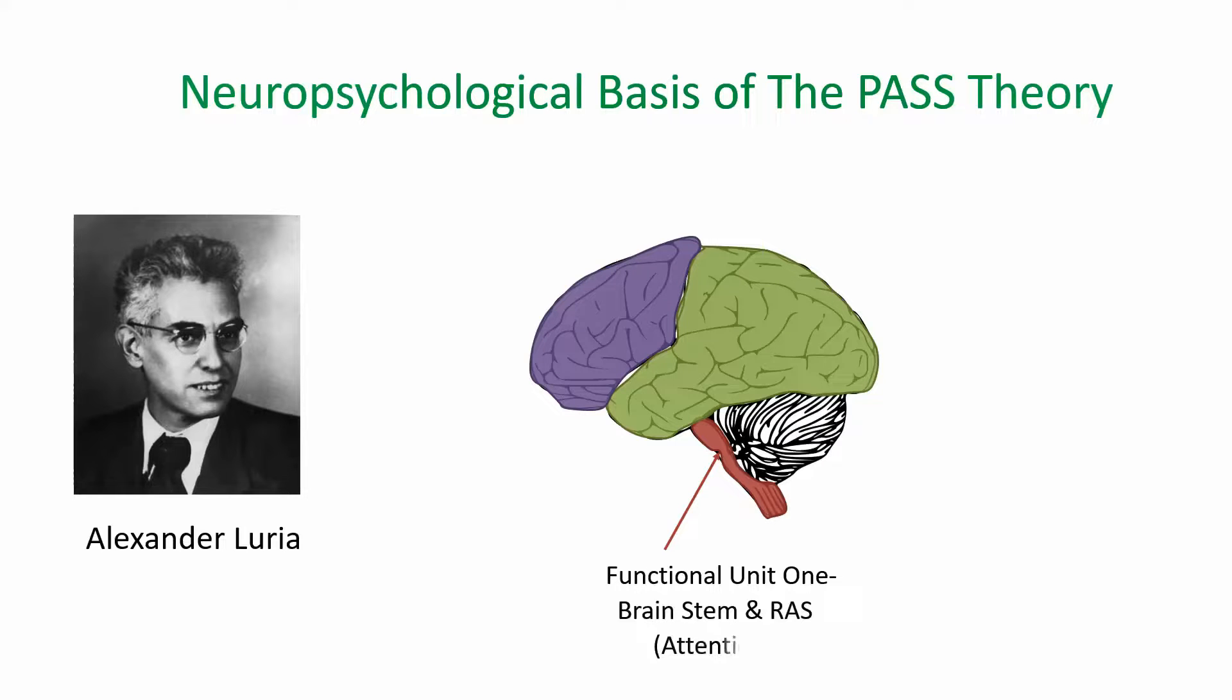The second unit includes the occipital, parietal, and temporal lobes in the back of the brain. This unit is responsible for receiving, analyzing, and storing sensory information, which supports both simultaneous and successive processing of the PASS theory.